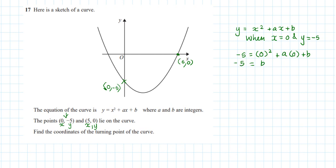So now I can rewrite my equation as y equals x squared plus ax minus 5.